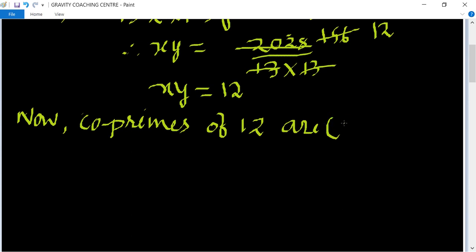Co-prime numbers means their HCF is 1. So 4 and 3's HCF is 1, and 12 and 1's HCF is 1.